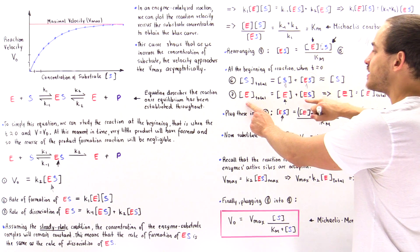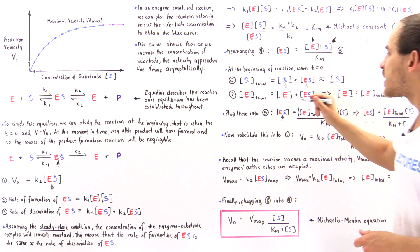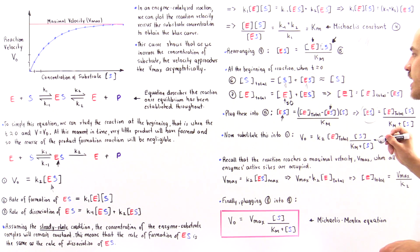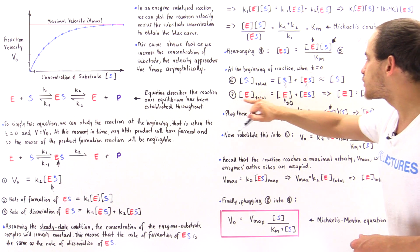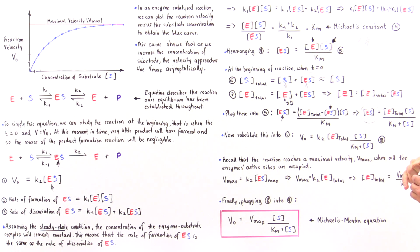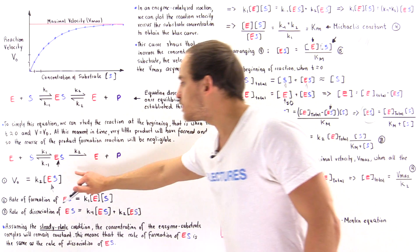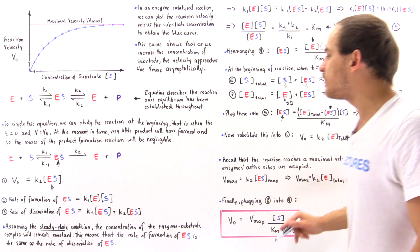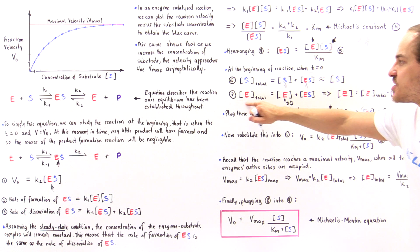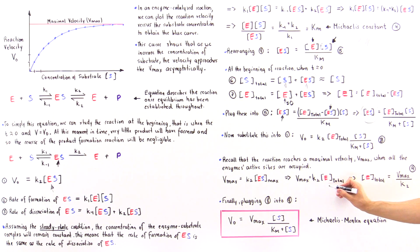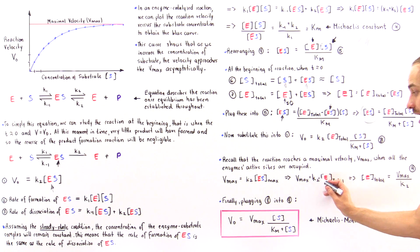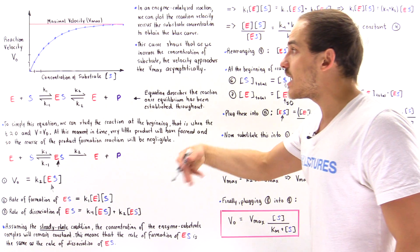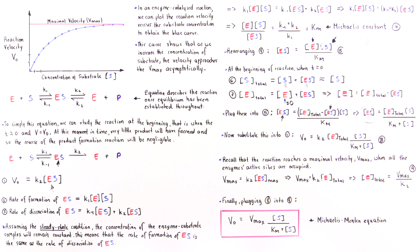That can be seen from equation seven. In this equation, when the free enzyme concentration is equal to zero, that means all the enzymes' active sites are filled with the substrate. So the V-max is equal to K2 multiplied by the maximum value of the enzyme-substrate complex concentration, and this maximum value of the enzyme-substrate complex equals the total enzyme concentration, so V-max equals K2 multiplied by the total enzyme concentration where all active sites are filled.